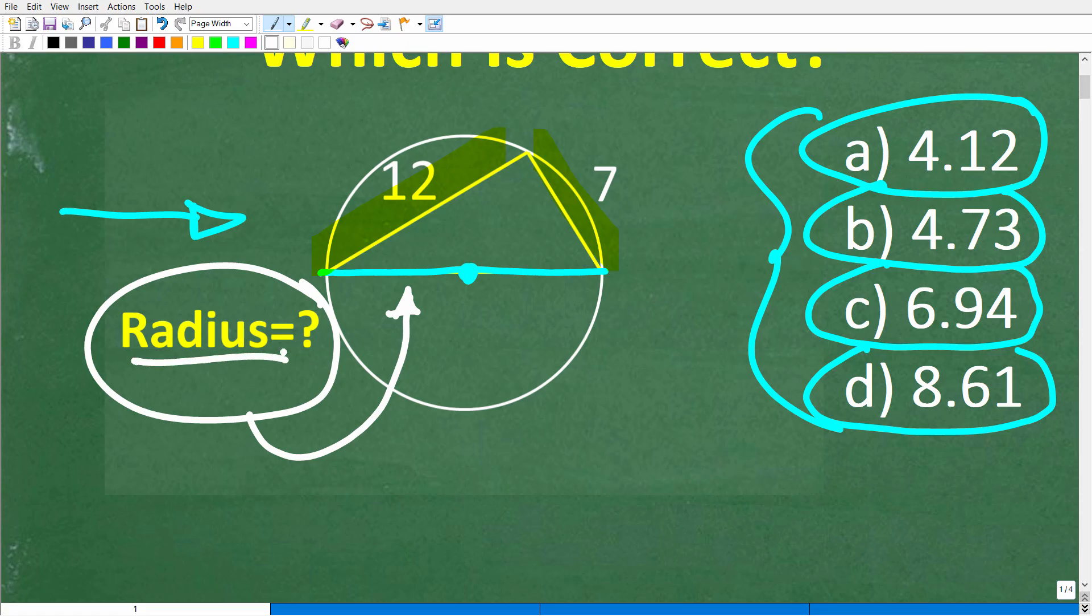So again, we're trying to find the radius. The radius is this distance right here—it goes from the center out to the edge. This entire length is the diameter of this circle. We have this triangle with sides of 12 and 7. So, what is the radius?